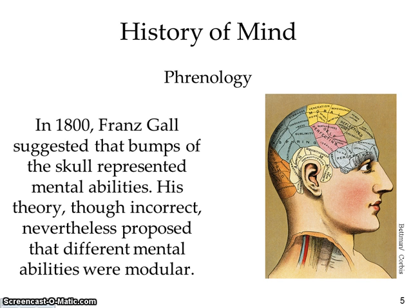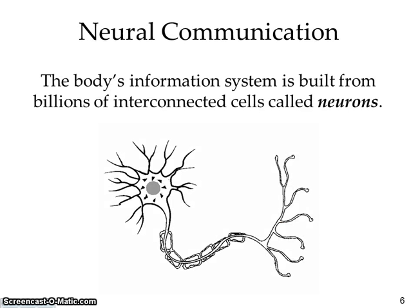Gall looked at phrenology — he looked at your brain as represented by the bumps on your head, and tried to figure out what the different bumps would actually represent. He thought certain bumps represented things like mental instability and all these different traits. Today we know that's not true, due to all the new technologies that we have.